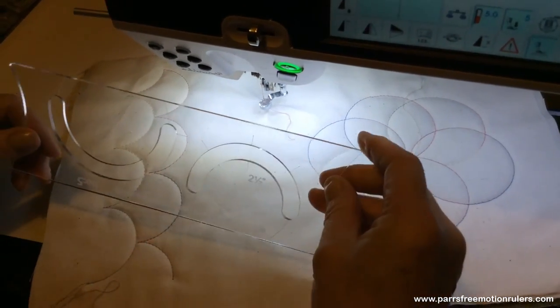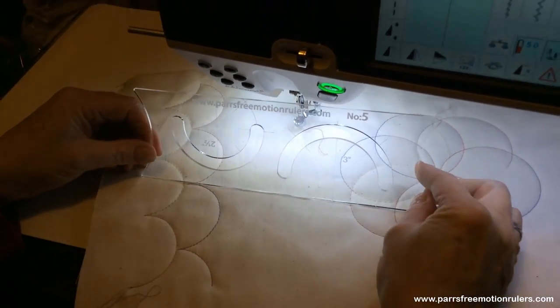So circles and clamshells. Number five, the circle ruler.